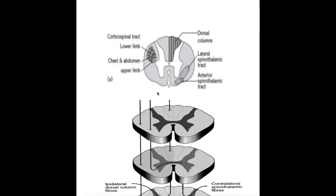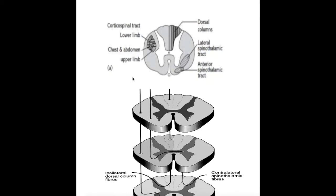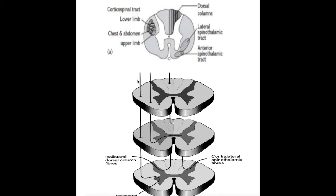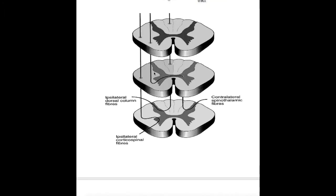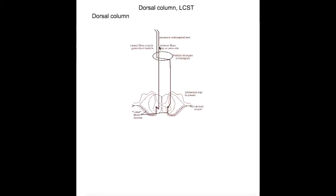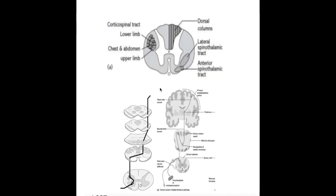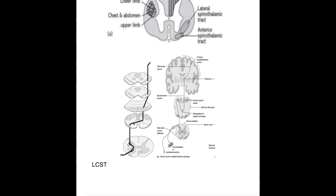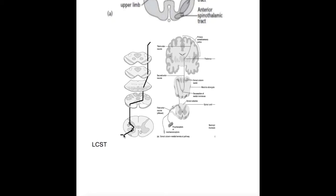Which of these tracts produces an ipsilateral defect and which produces a contralateral defect? The lateral corticospinal tract and the dorsal column tract run ipsilaterally at the spinal cord level. The lateral corticospinal tract starts from the motor cortex, decussates in the medulla at the pyramids, crosses to the opposite side, and then runs in the spinal cord ipsilaterally. The dorsal column tract runs from the spinal cord ipsilaterally up to the medulla in fasciculus cuneatus and fasciculus gracilis, decussating in nucleus cuneatus and nucleus gracilis, so they are ipsilateral in the spinal cord.